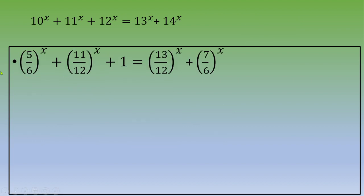One way to solve this is to focus on the first two terms. Let's call f(x) = (5/6)^x + (11/12)^x.